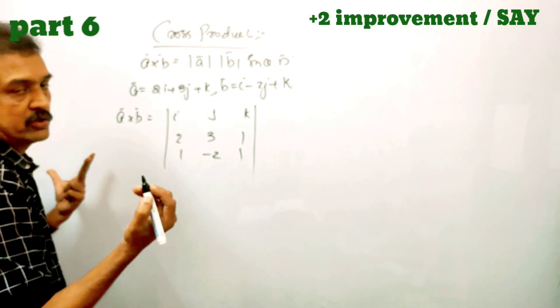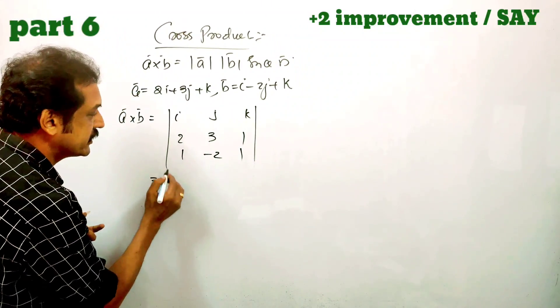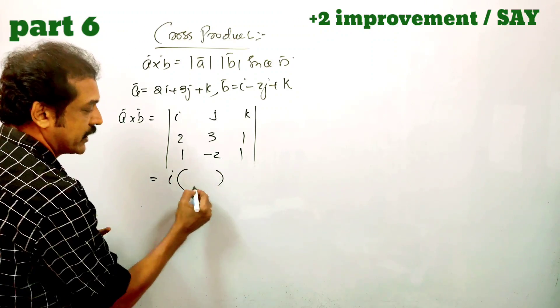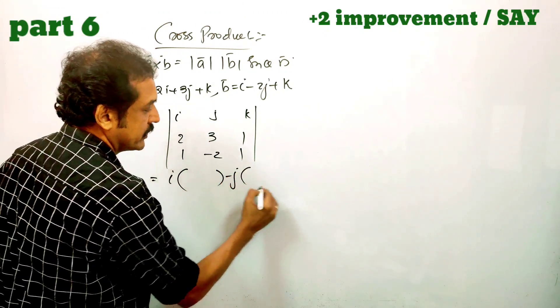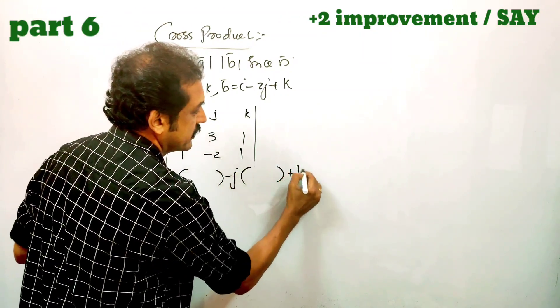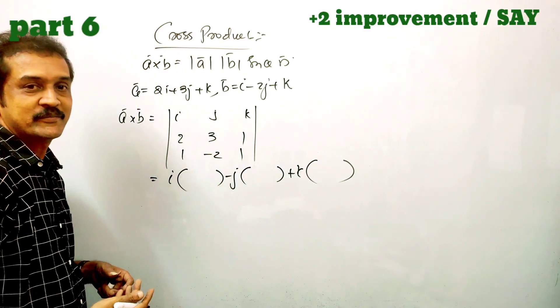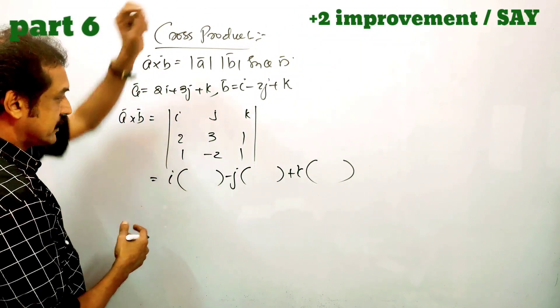Now, if you expand this determinant, you get i in a bracket, minus j in a bracket, and k in a bracket. Okay, now let's work out each sign.